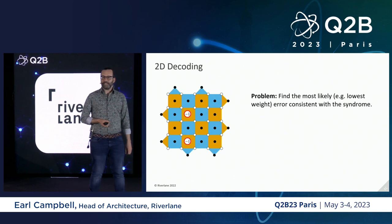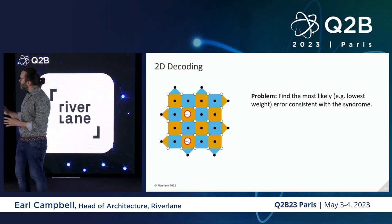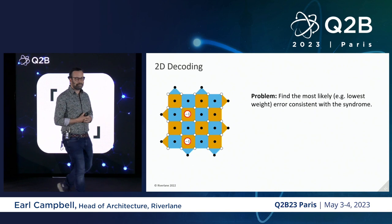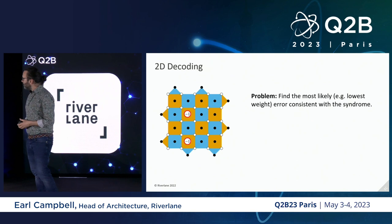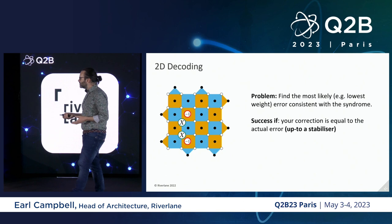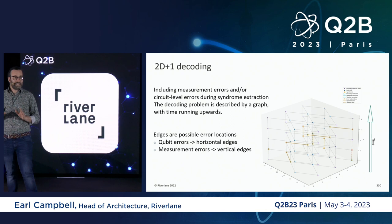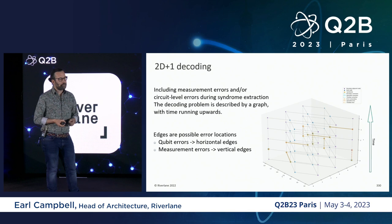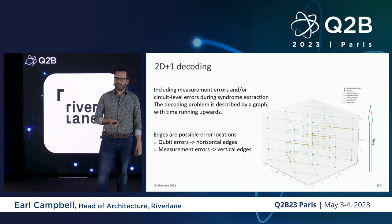This is a cartoon picture of the surface code. What I've illustrated here are two measurement outcomes showing that something has gone wrong nearby. The problem in error correction is to find the most likely error — the actual error that happened — that explains this set of measurement outcomes. One possible solution is a pair of X errors on these qubits, and we consider ourselves successful if we get the correct answer up to some equivalences. But that was a very toy picture, because it assumed every measurement result was accurate. In practice, measurement errors can happen and are often the biggest source of error in your system.